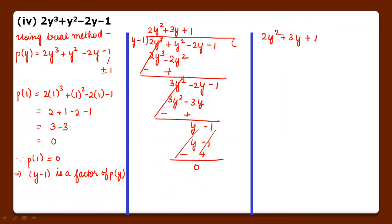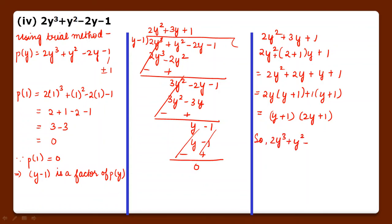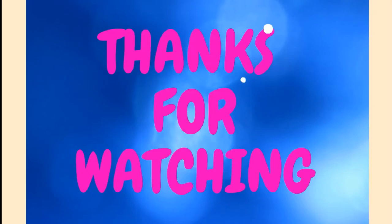Factorizing 2y square plus 3y plus 1: 2 into 1 = 2, and factors are 2 and 1, so we split the middle term as 2y plus y. Taking 2y common from the first two terms and 1 common from the last two gives (y plus 1), and the other factor is (2y plus 1). So 2y cube plus y square minus 2y minus 1 = (y minus 1)(y plus 1)(2y plus 1). In this way we have got three factors. I hope this question is clear to you. If you have any doubt, you can ask in the comment section.